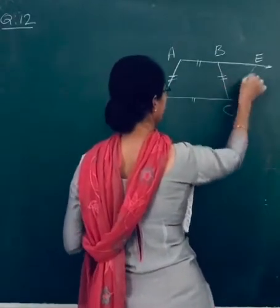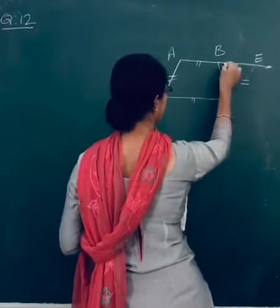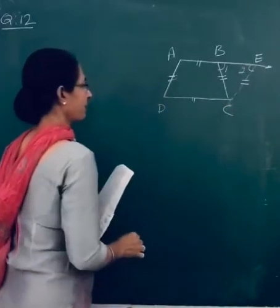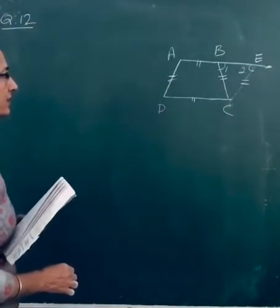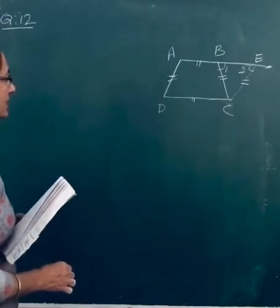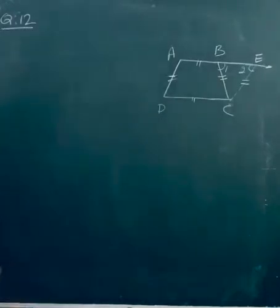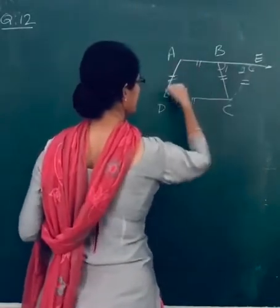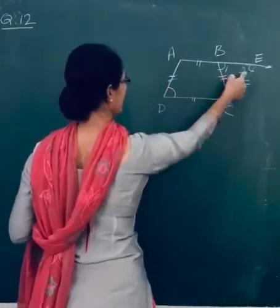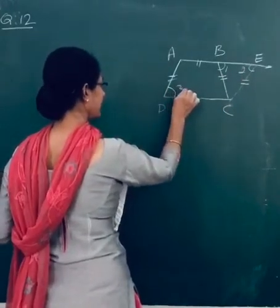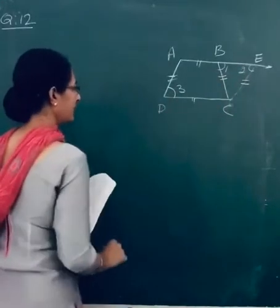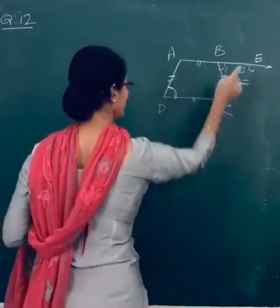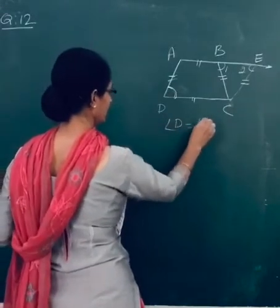Now ADCE is a parallelogram. In triangle BCE, angle B equal angle A. Mark angles 1 and 2 as equal. Why? Because in a triangle, angles opposite to equal sides are equal. BC equal CE, so opposite angles are equal.